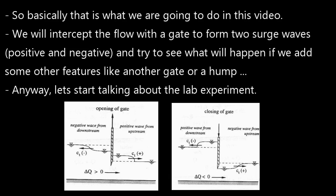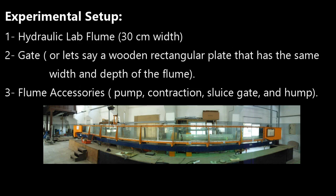Anyway, let's start talking about the lab experiment. The experimental setup was a hydraulic lab flume, 30 cm width, and a gate — a wooden rectangular plate that has the same width and depth of the flume — and some flume accessories like pump, contractions, close gate, and a hump.